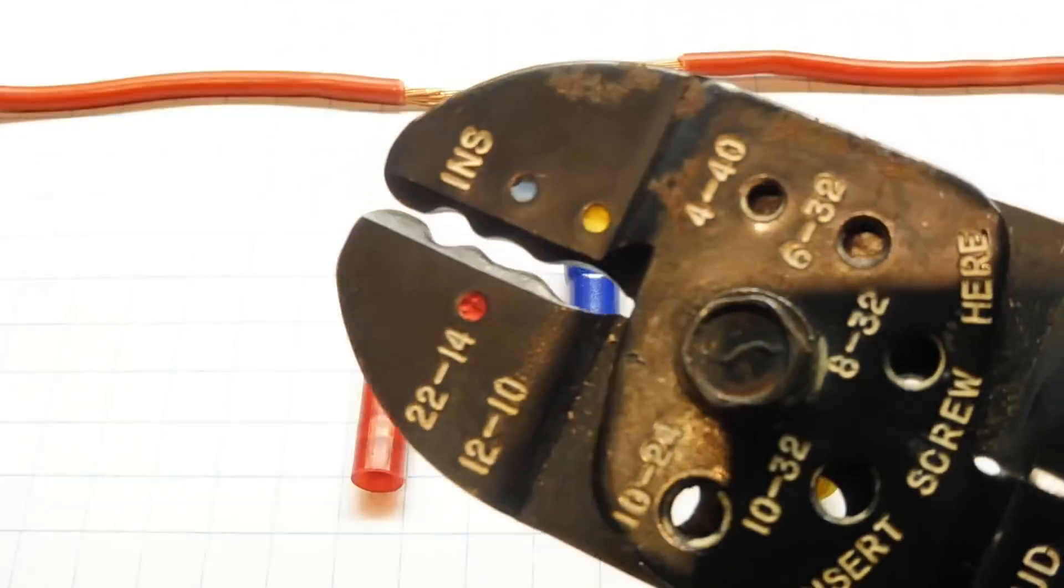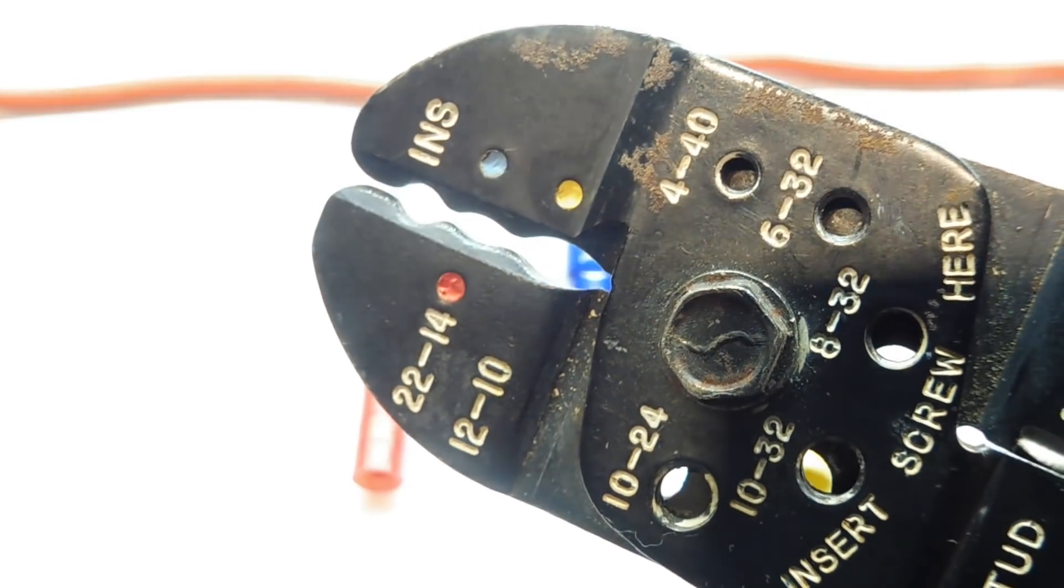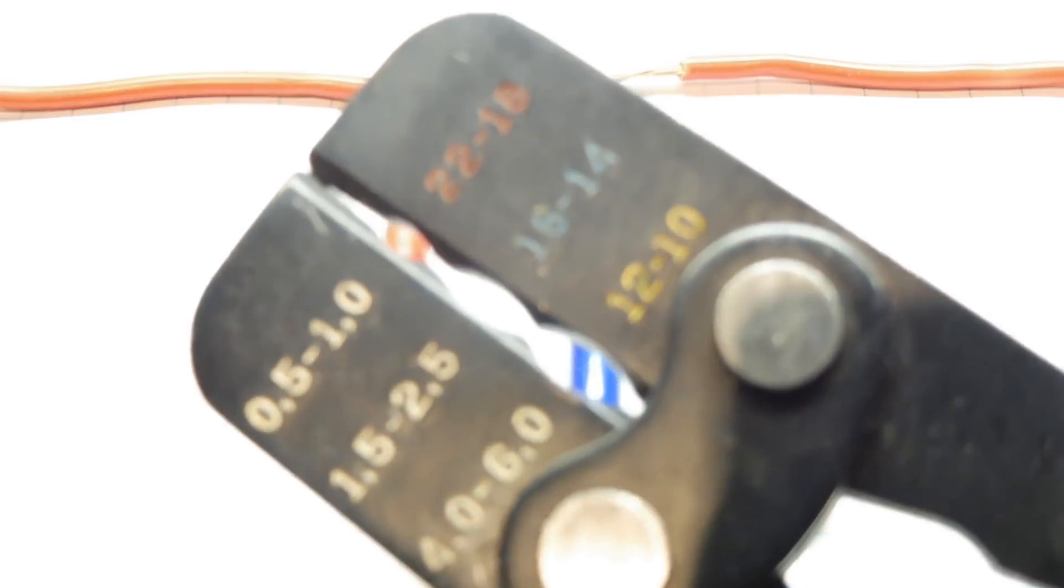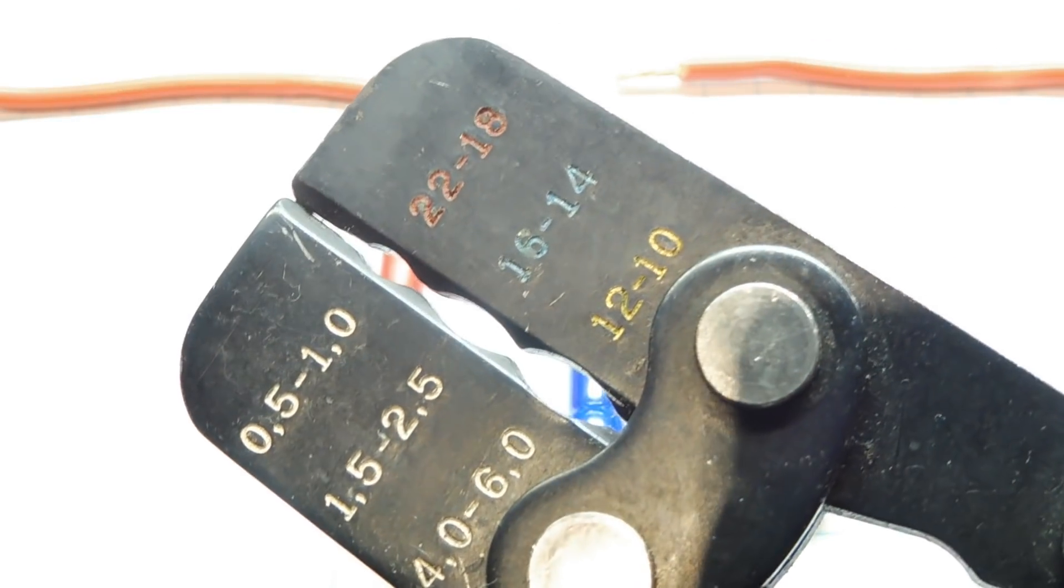If you look on your crimper, your crimper will be color coded for the three sizes. There's another type of crimper, this is a ratchet type of crimper and you can see also it has the three colors and the three sizes of crimps.